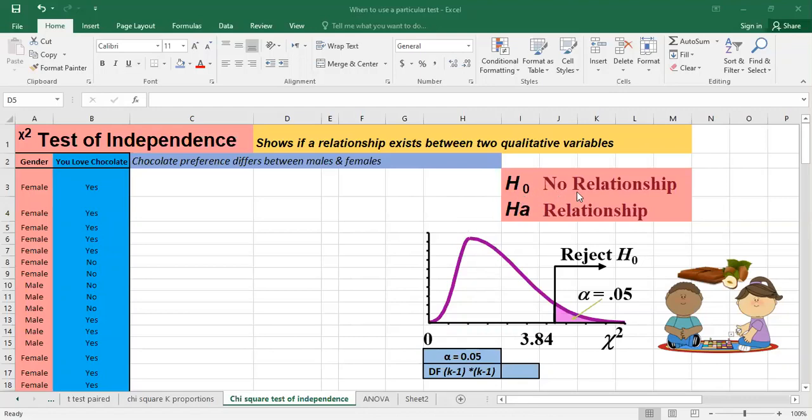So the null hypothesis states that there is no relationship between the two variables, the gender and the preference for chocolate, and the alternative hypothesis states that there is a kind of relationship.